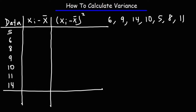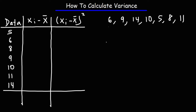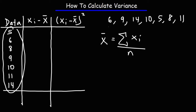Now let's calculate the sample mean. The sample mean is basically the average. It's equal to the sum — represented by the sigma symbol — of all the data points, divided by the number of data points we have, or the sample size. So let's take the sum of these numbers: 5 plus 6 plus 8 plus 9 plus 10 plus 11 plus 14 gives me a sum of 63.